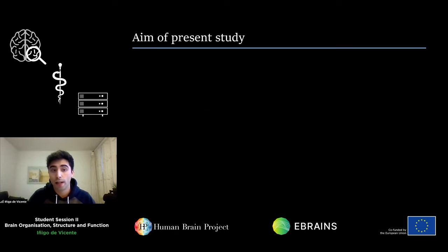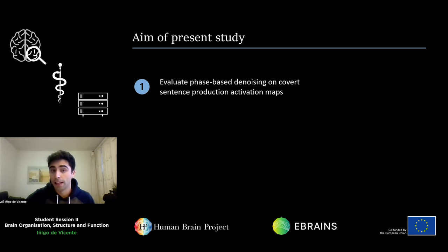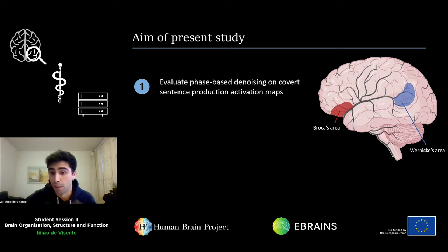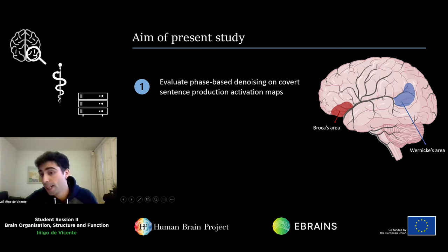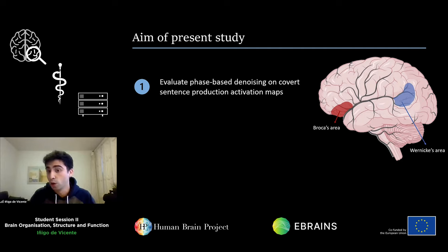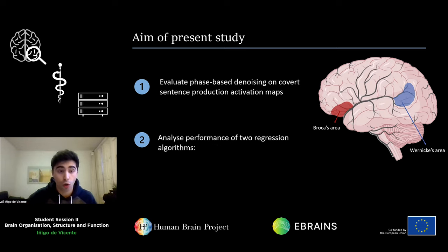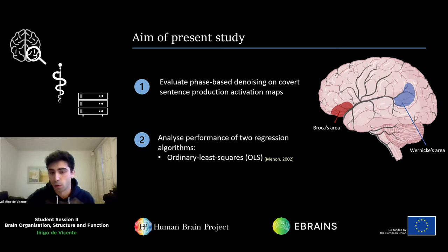In this study, we evaluated this method on activation maps that were acquired while participants had to produce speech. This is particularly interesting because speech production areas such as Broca's area and Wernicke's area are very close to the sylvian fissure, which is the sulcus that may contain large veins. So we hypothesized that regions close to this fissure might get denoised, or the activations might be reduced. In addition, we wanted to analyse this method using two different regression algorithms: one is the ordinary least squares method, OLS, and the other is the orthogonal distance regression method, ODR.